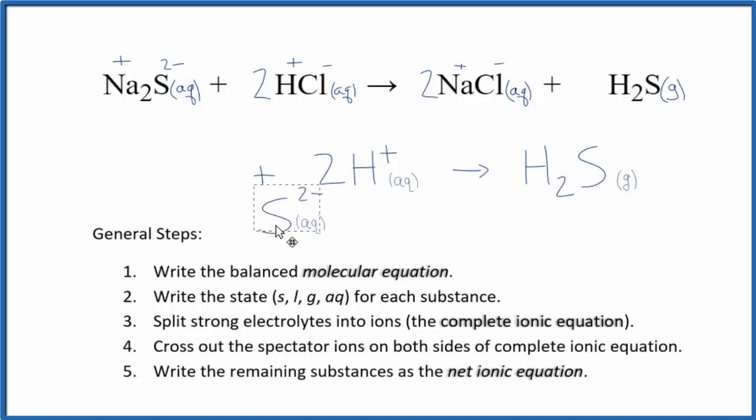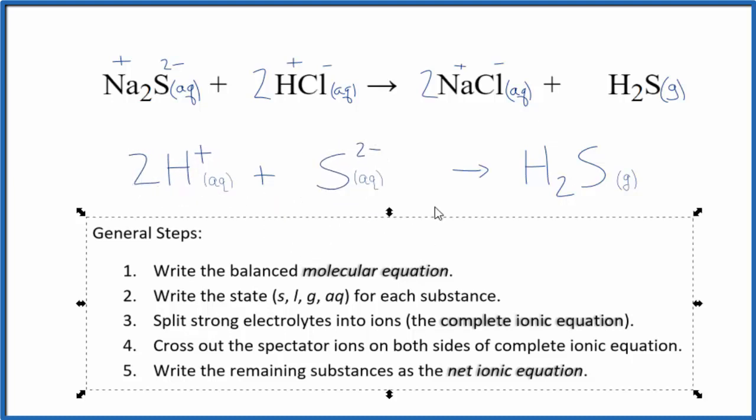Sometimes you'll see the positive ion written first. It doesn't matter. It's the same equation. Maybe it looks a little nicer. I don't know. Either way, this is the net ionic equation for Na2S plus HCl. And this is Dr. B. thanks for watching.